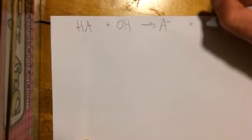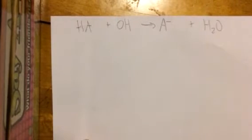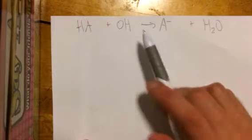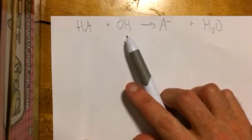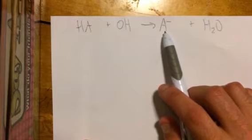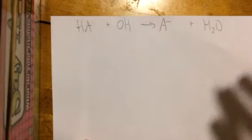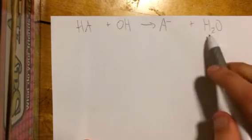So with this problem we will start with the shorthand: HA plus OH goes to A minus plus H2O. So you have the weak acid, which in this case is H2PO4, the OH which will be NaOH in the problem, A minus which is the conjugate base which will be HPO4, and then of course water.